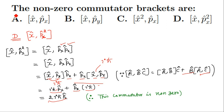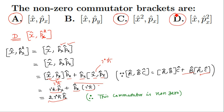Hence out of the four choices, the commutators given in choices A, C, and D are non-zero. The correct answers are A, C, and D.